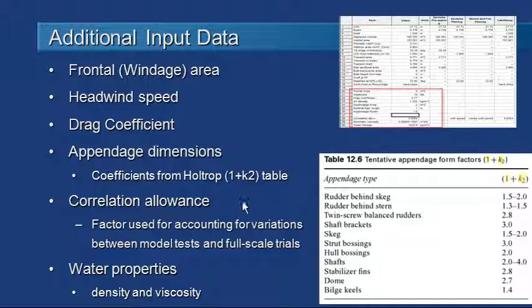Another possible additional data entry item is the correlation allowance — that's a factor used to account for differences between model tests and full-scale tests. It defaults to 0.0004. Some of the methods will calculate the correlation allowance automatically, but you can override that for the other methods if you wish. And finally, although it will be rare, you can modify the water properties if you need to.